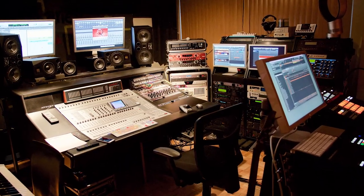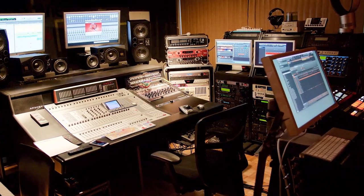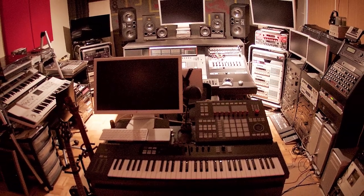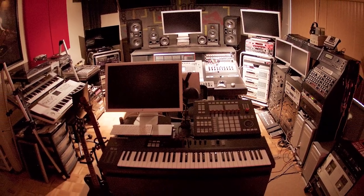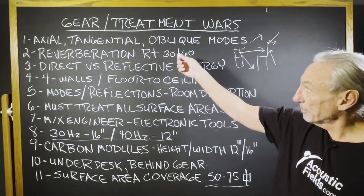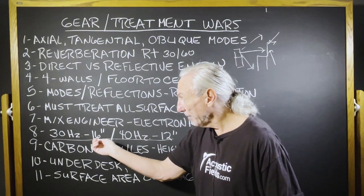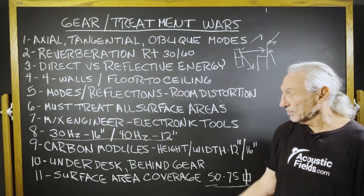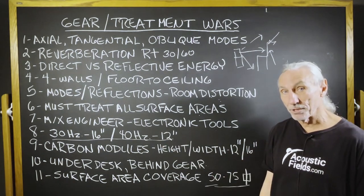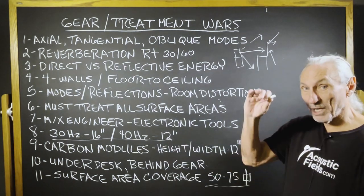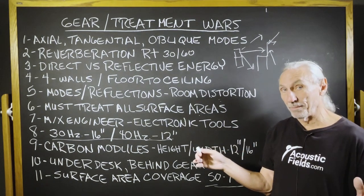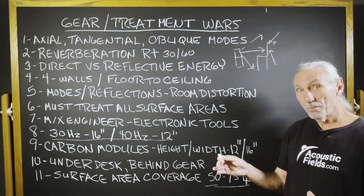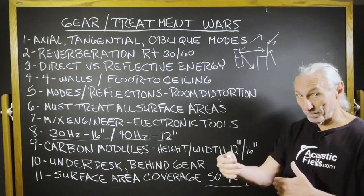You can see in this picture that this engineer has a lot of tools — just tool after tool after tool. We've got to go after these modal issues. If we're going after 30 cycles, we need 16 inches of space. If we're going after 40 cycles, we need 12 inches of space. That's a given. We can change the height and the width of the module, but we can't change the depth.